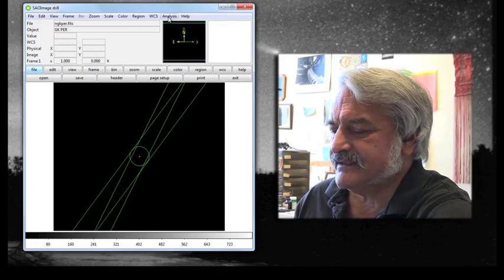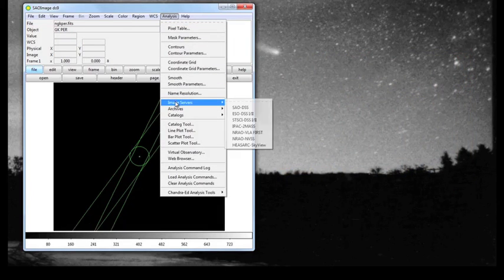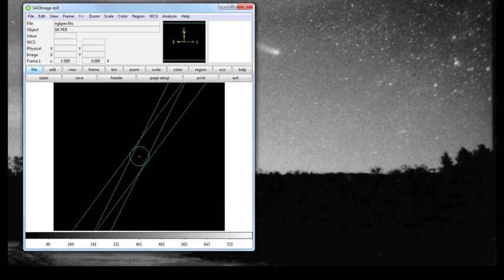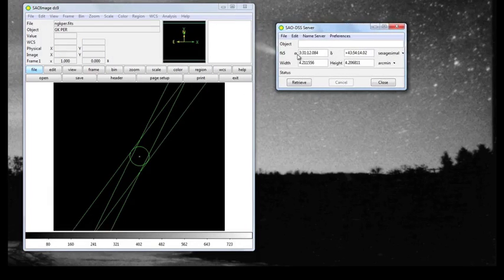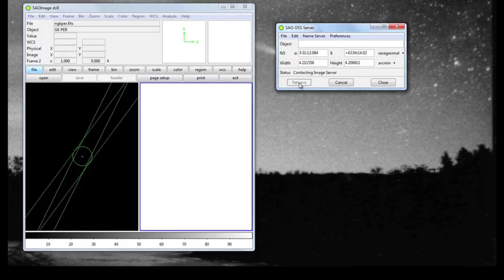You can see the RA and DEC in the information box over here. Let's see if there's anything there in the optical or visible part of the spectrum. We go to Analysis. We go to Image Servers. We go to SAO DSS. That will bring up a little box. And you'll see that the RA and DEC are already in there for us. We're going to retrieve it.